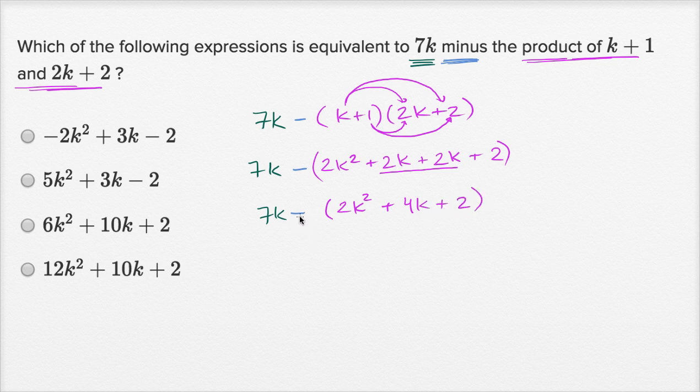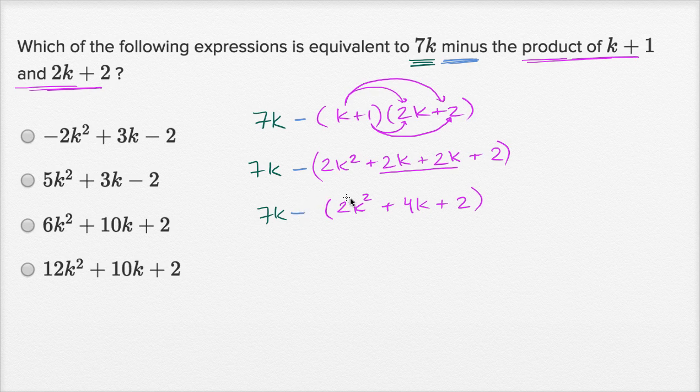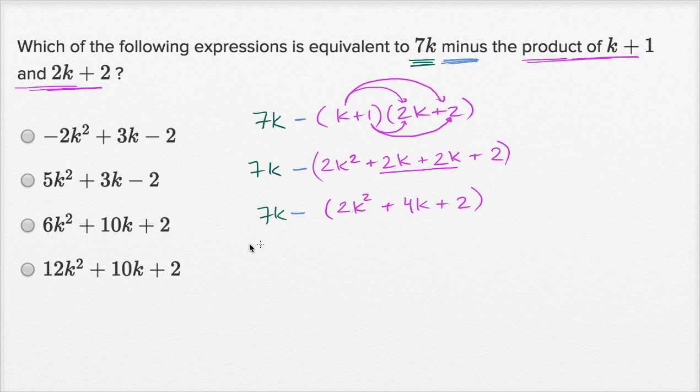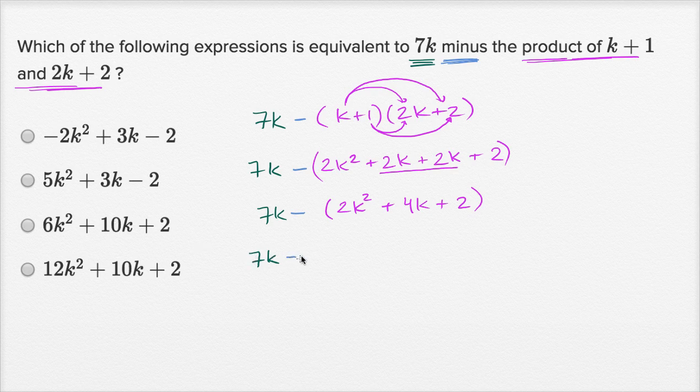And now we can distribute this negative sign, or you could even view this as minus one times all of this. So this is going to be 7k minus 2k squared, minus 2k squared,